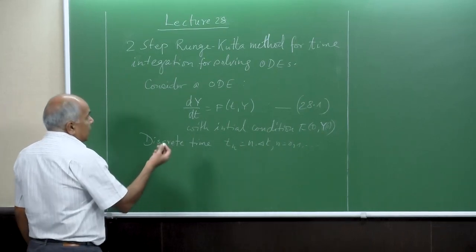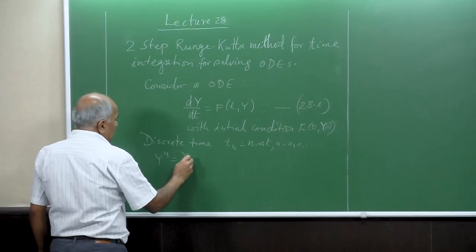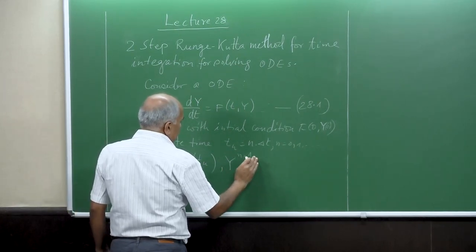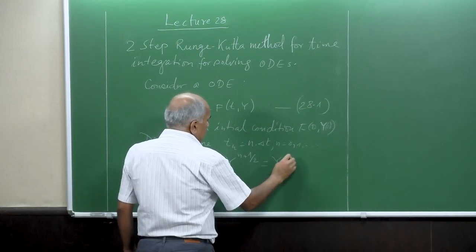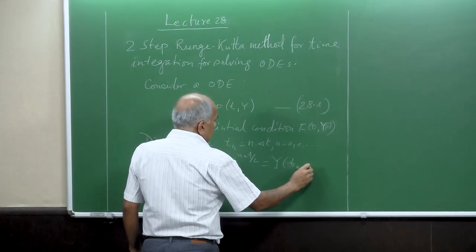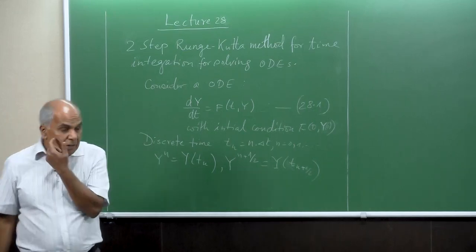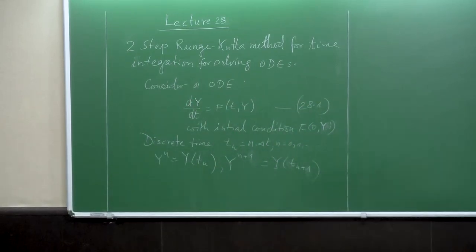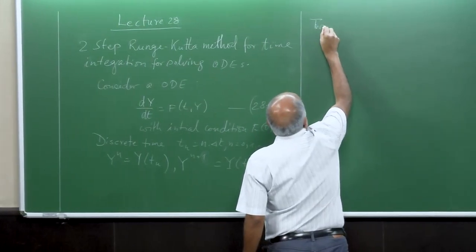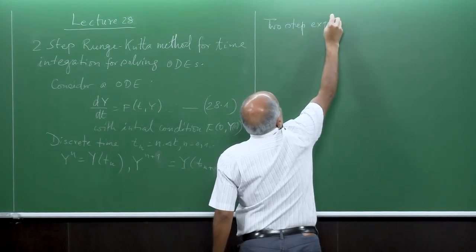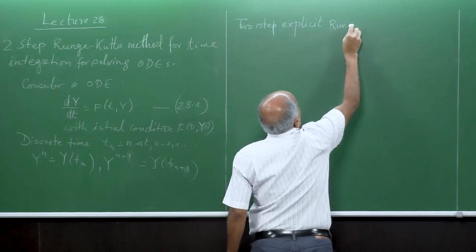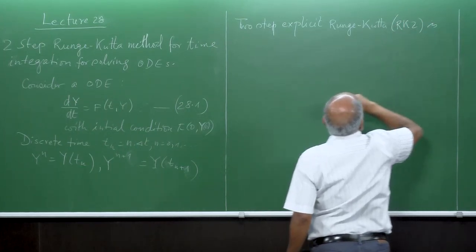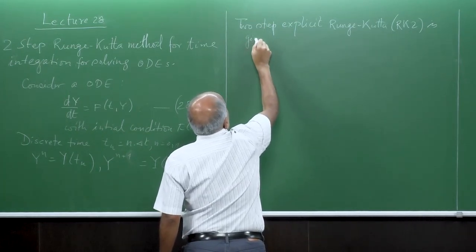We denote, same as in Euler, y_n = y(t_n), y_{n+1}, and also y_{n+1/2}. So I will be having this notation here. Now the two-step Runge-Kutta — I call it RK2 — is given by the following.